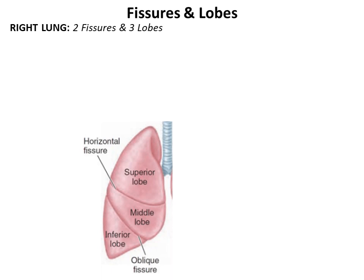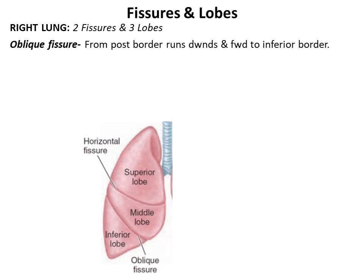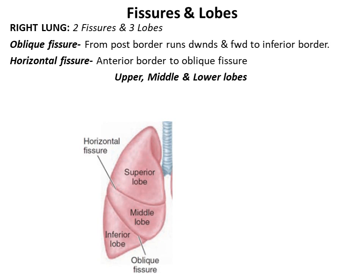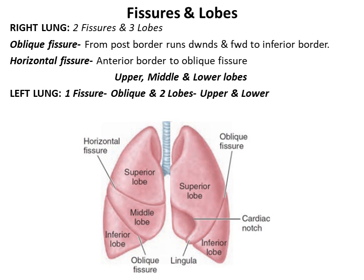The fissures and lobes of the lungs. The right lung exhibits two fissures which divide it into three lobes. The oblique fissure starts from the posterior border, runs obliquely downwards and forwards to cut the inferior border. The horizontal fissure starts from the anterior border and runs horizontally to meet the oblique fissure in the mid-axillary line. These two fissures subdivide the right lung into three lobes: superior or upper lobe, middle lobe, and the inferior or lower lobe. The left lung shows only one fissure, the oblique fissure, which divides it into two lobes: superior or upper lobe and inferior or lower lobe.